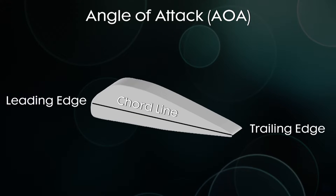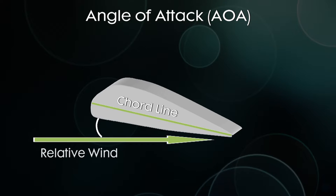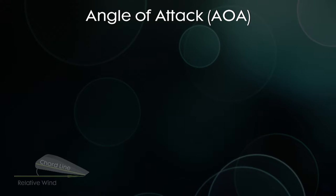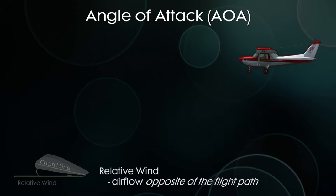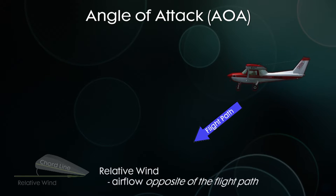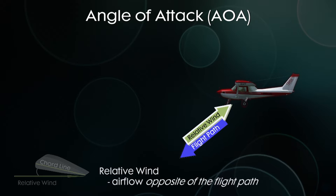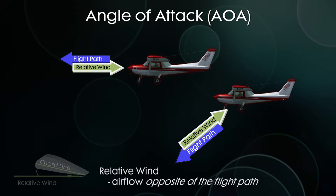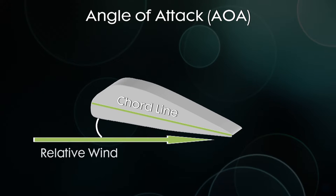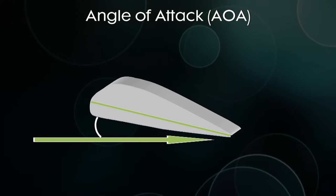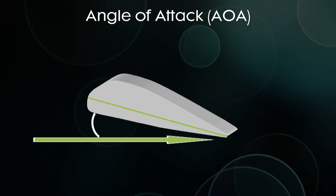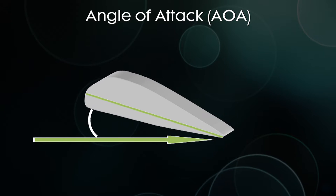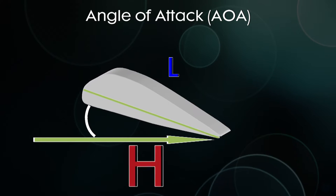The angle of attack is the angle between the chord line and the relative wind. Relative wind is the airflow opposite of the flight path — it's not necessarily where the airplane is pointed. If you're descending, your flight path is downward, so your relative wind is coming from below. If you're flying straight ahead, relative wind will be from the front. The angle of attack between the chord line and relative wind determines how much lift you get. The bigger the angle, the more lift, as it creates a higher difference in pressure.